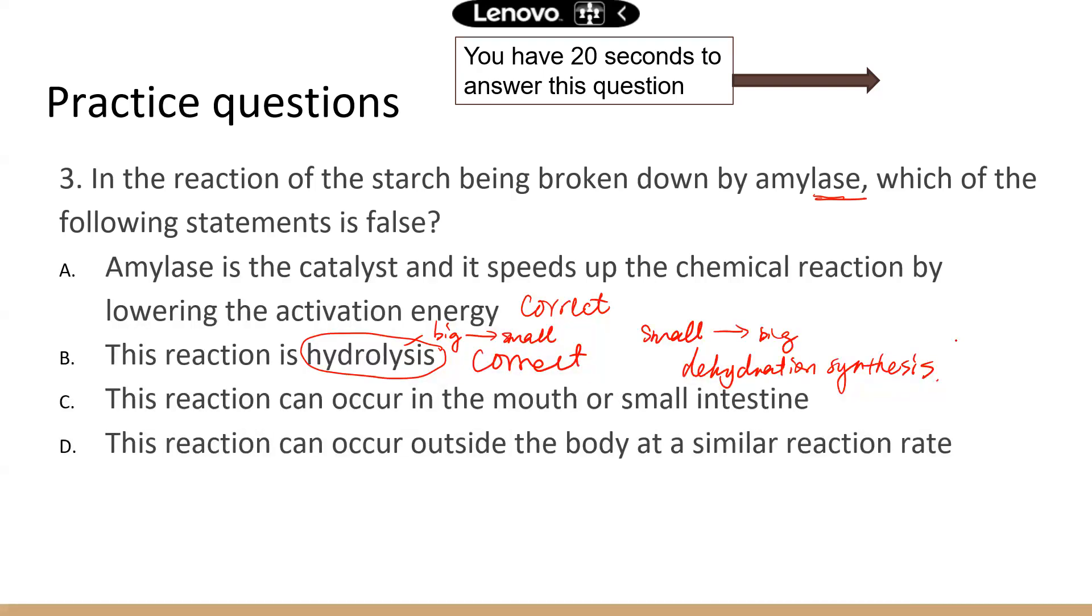D. The reaction can occur outside the body at a similar reaction rate. That's a false statement. So that's the correct answer. The amazing thing about enzymes in our body is that they can dramatically increase the chemical rate without any extreme conditions.